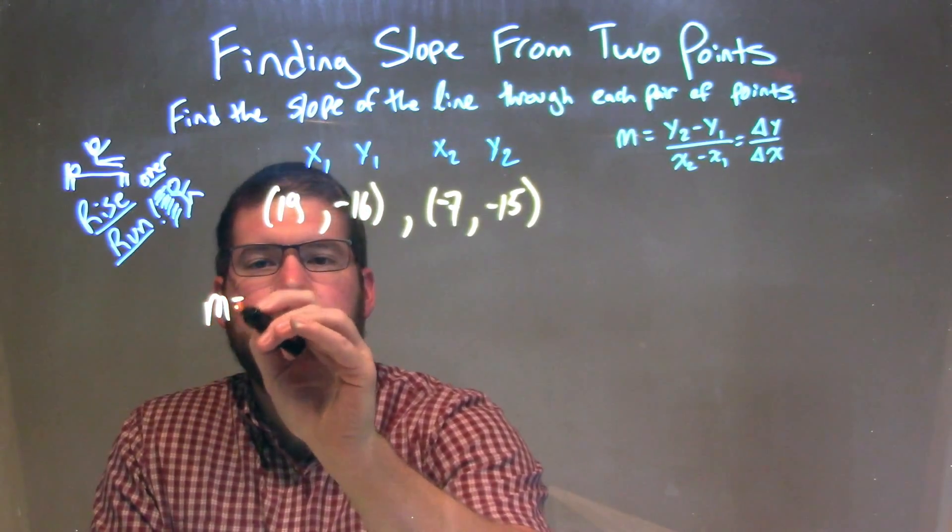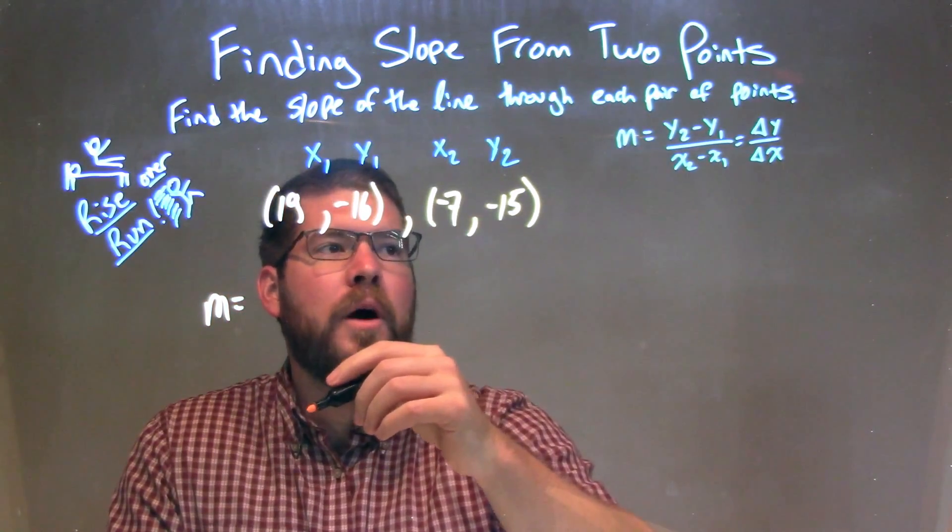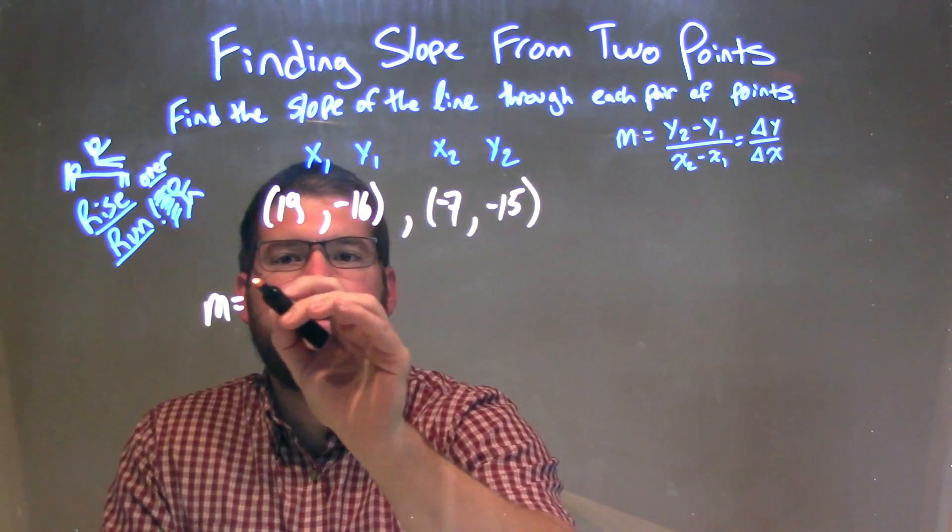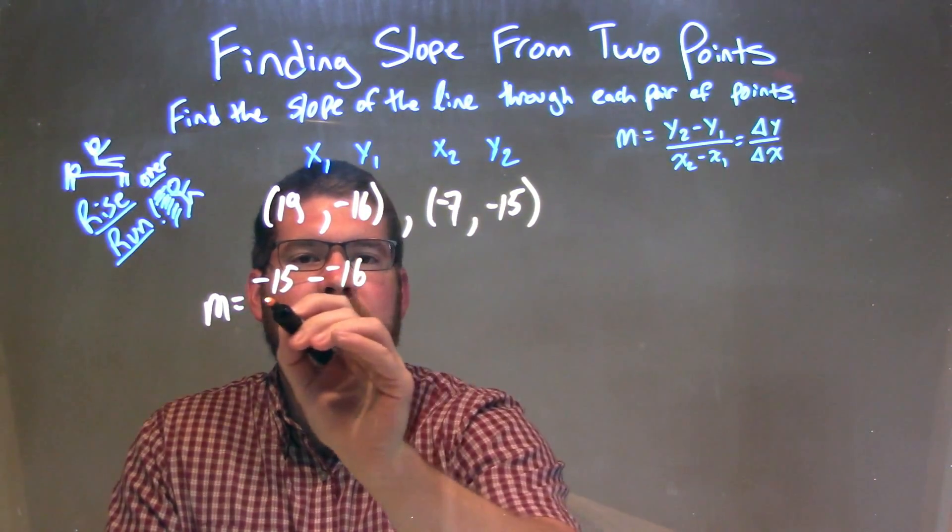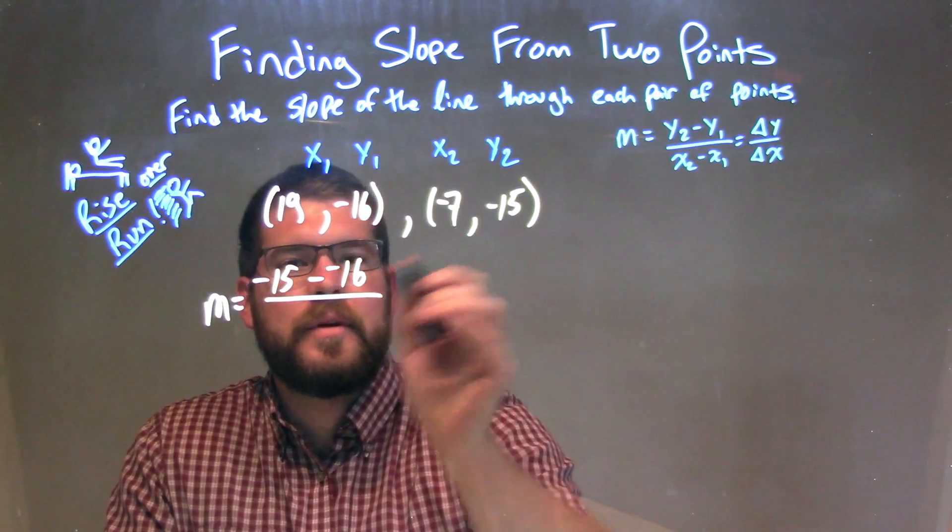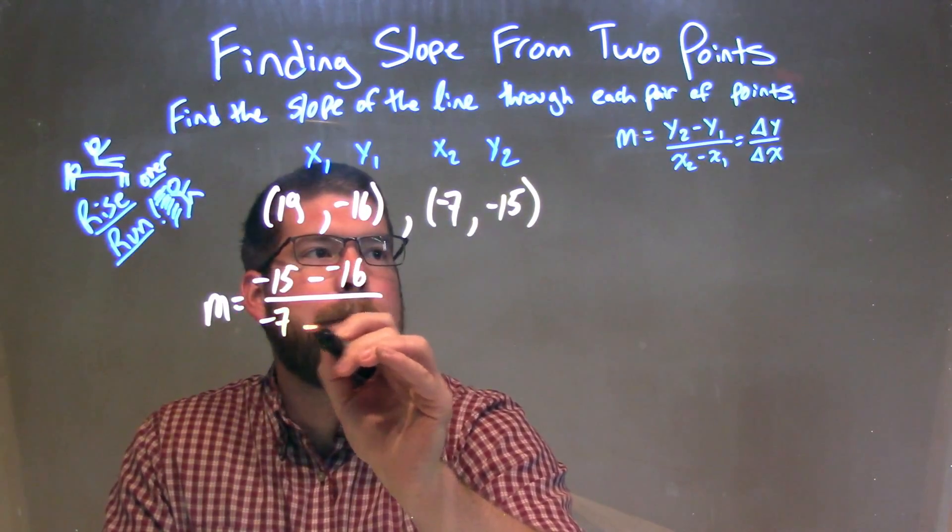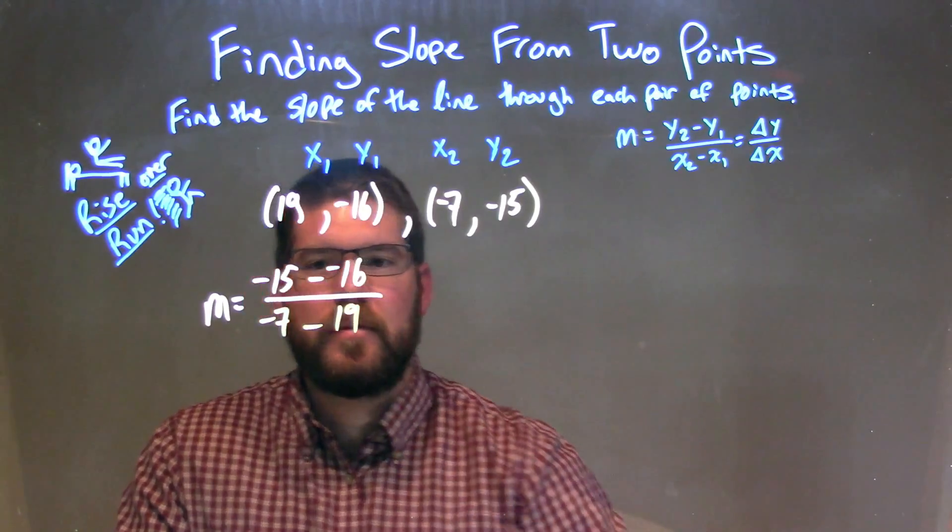So we have M equals Y2 minus Y1, so Y2, which is negative 15, minus Y1, which is negative 16, all over X2, negative 7, minus 19.